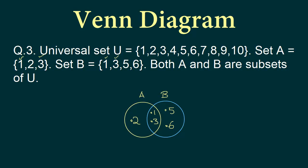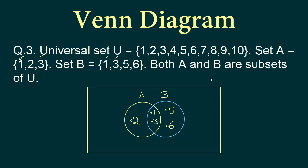Now we draw our universal set as a rectangle around everything, labelled uppercase U. The universal set has 1 through 10. We already have 1, 2, 3, 5, and 6 placed. So we still need 4, 7, 8, 9, and 10. We arbitrarily position these five elements anywhere inside the bigger rectangle, making sure they are not inside circle A nor inside circle B. This is how we solve these types of questions.